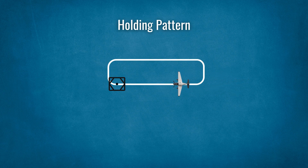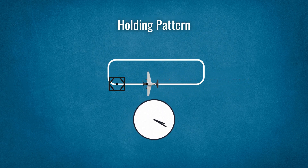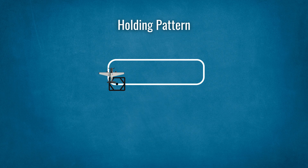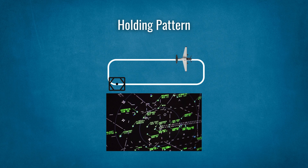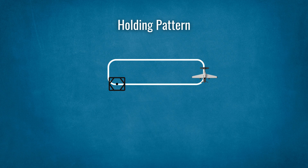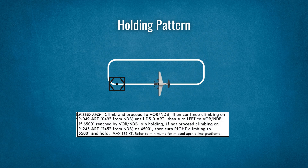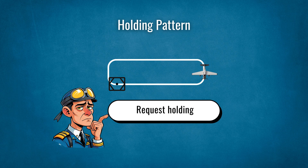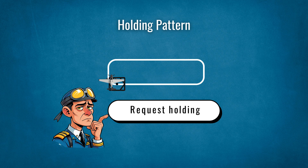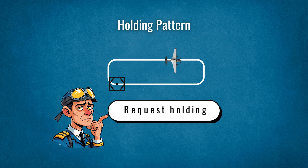Holding patterns are flown as a delaying tactic, be it for ATC requirements such as airspace saturation or approach delays, as the published termination of a missed approach procedure to be flown whilst coordinating further clearance, at pilot request to allow time for completion of abnormal or emergency checklist procedures, or at any other time that a delay in flight progress is required.